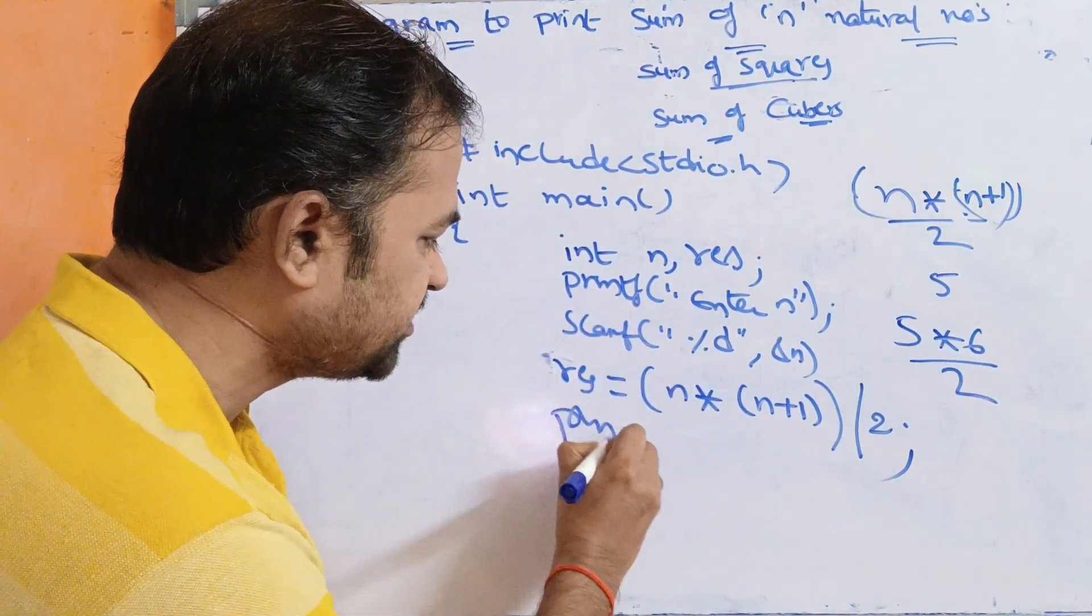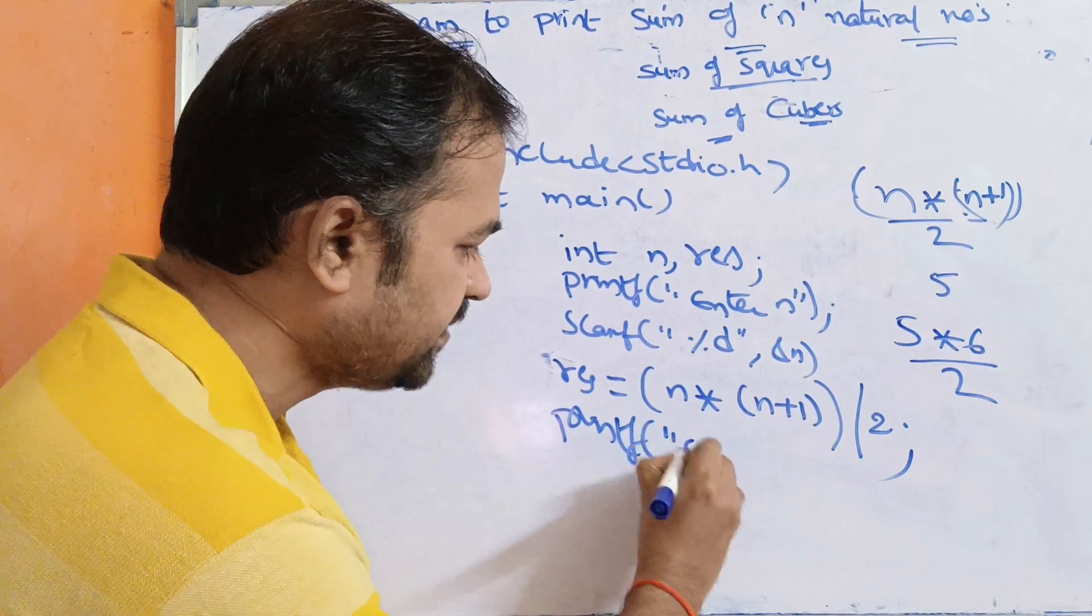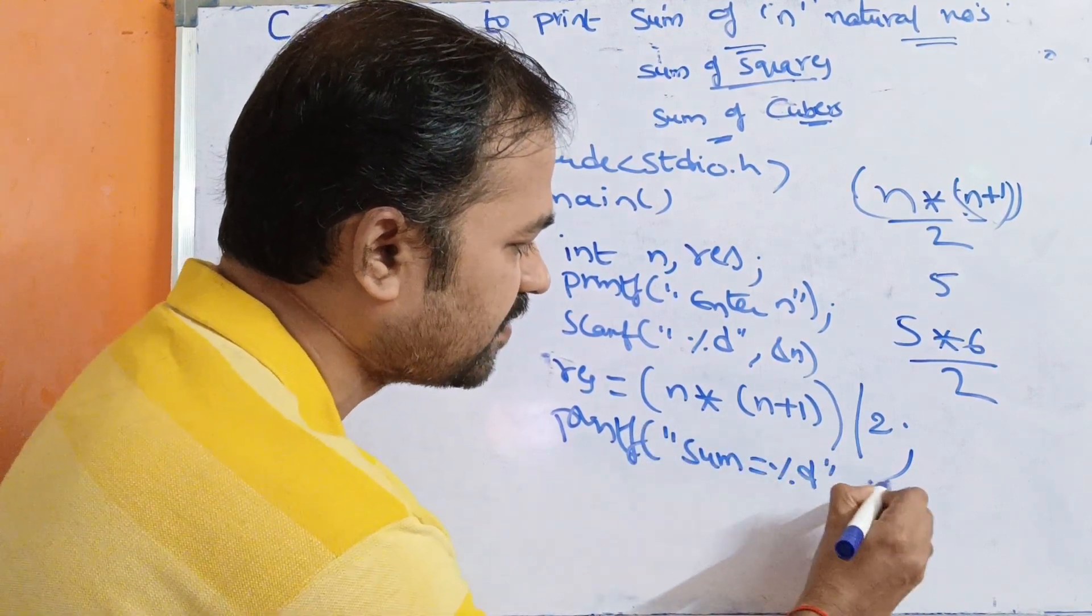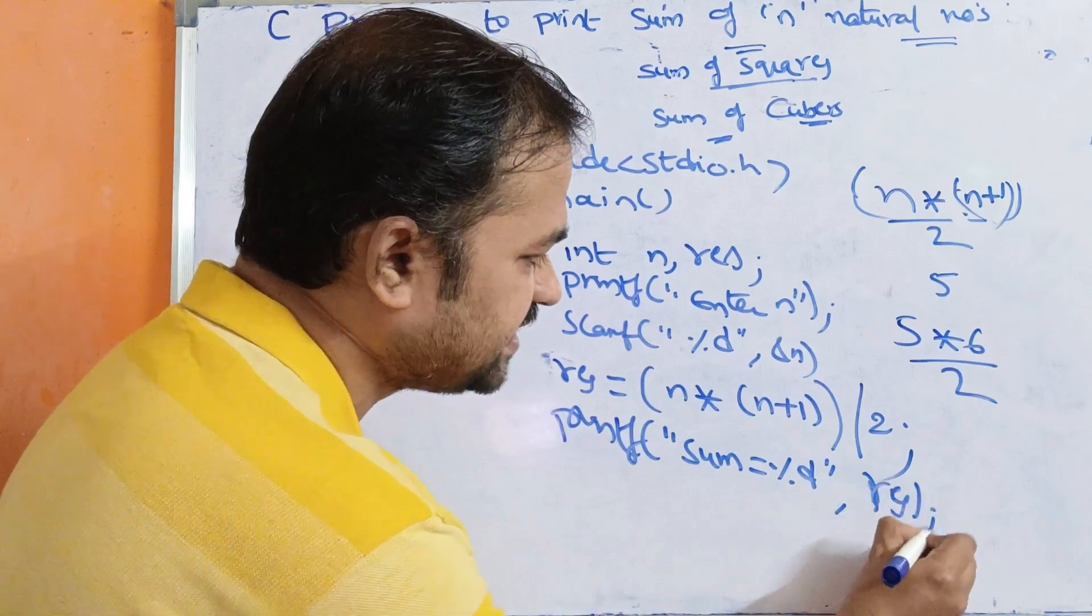Now the output is displayed: printf sum is equal to percentage d, res.